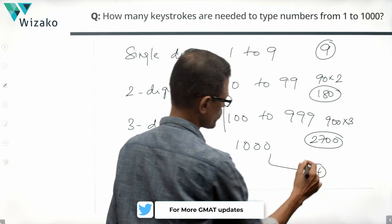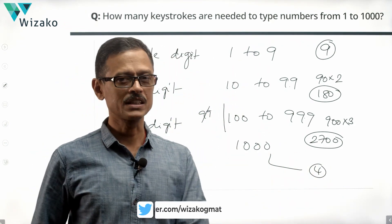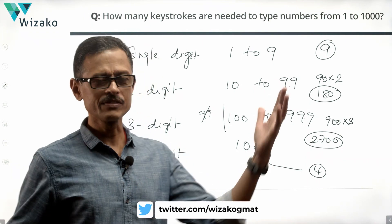And then we require four keystrokes for the one single, one four digit number that we have which is 1000. Add all of these up. You should get the answer.